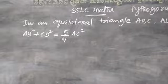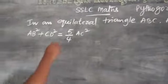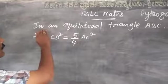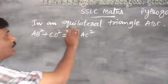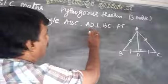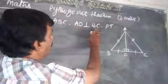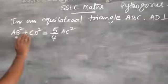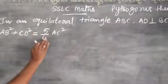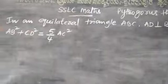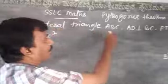The question says: In an equilateral triangle ABC, AD is perpendicular to BC. Prove that AB square plus CD square is equal to 5 by 4 AC square. We are working with an equilateral triangle.